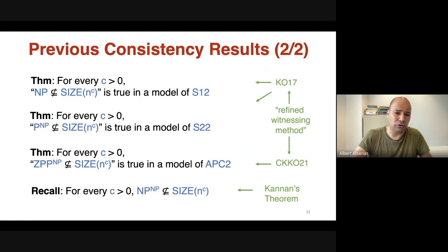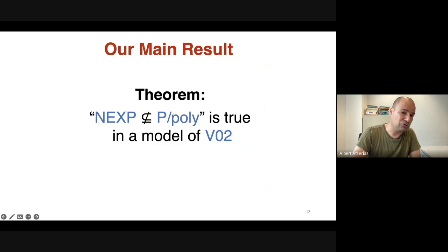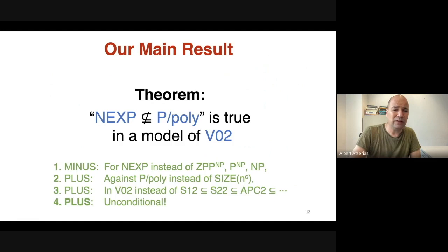Let's go back to our main result. The main result is that NEXP ∉ P/poly is true in a model of V⁰₂ — a stronger theory than all those considered before. On the other hand, NEXP is also a much higher complexity class than those considered before. Let's discuss some minuses and some pluses of this theorem.